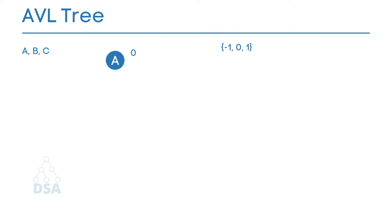Next, insert B. In alphabetical order B comes after A, so we assume B is greater than A and insert it as the right child of the root. The balance factor of B is 0 since it has no subtrees. Recalculating A's balance factor: it now has one right child and no left child, giving 0 minus 1 equals minus 1. This still satisfies the AVL property, so the tree is balanced.